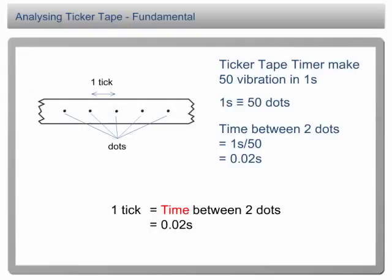In brief, a ticker tape timer can be used to measure time as short as 0.02 second. This makes it a convenient tool for measuring velocity and acceleration.